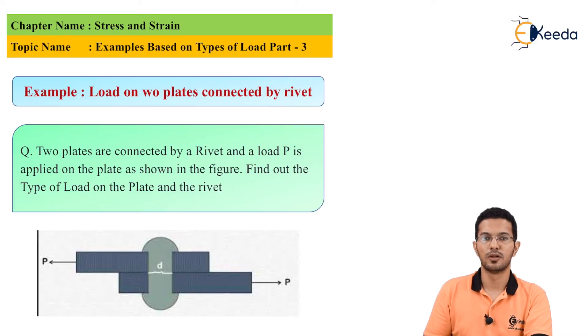For the rivet, the load P is parallel to the surface. For the rivet, the load P is parallel to the surface and passes through the longitudinal axis. Hence, for the rivet load, P is transverse shear load or TSL.